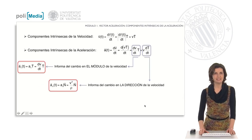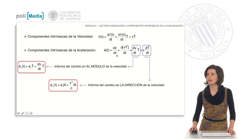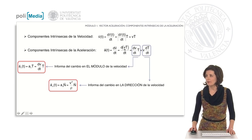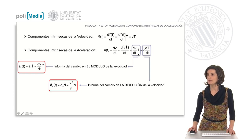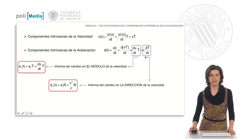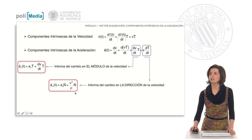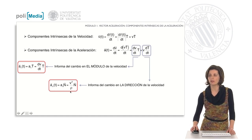Let us now calculate the intrinsic components of the acceleration. The intrinsic velocity was expressed as the modulus of the velocity times the unit vector t. To calculate the intrinsic components of the acceleration, we take the derivative of this velocity vector with respect to time. The derivative of a product gives two terms: the first informs us of the change in the velocity modulus and is called tangential acceleration; the second informs us of the change in direction, since the derivative of the tangent vector appears, and is called normal acceleration. We will show that it equals the velocity modulus squared divided by the radius of curvature, multiplied by the unit vector n.